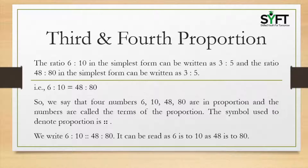The ratio of 6 is to 10 in the simplest form can be written as 3 is to 5. And the ratio of 48 is to 80 in the simplest form can also be written as 3 is to 5. So, 6 is to 10 is equal to 48 is to 80. We say that the four numbers 6, 10, 48, 80 are in proportion, and these numbers are called the terms of the proportion. The symbol used to denote proportion is double is to, written as 6 is to 10 double is to 48 is to 80.